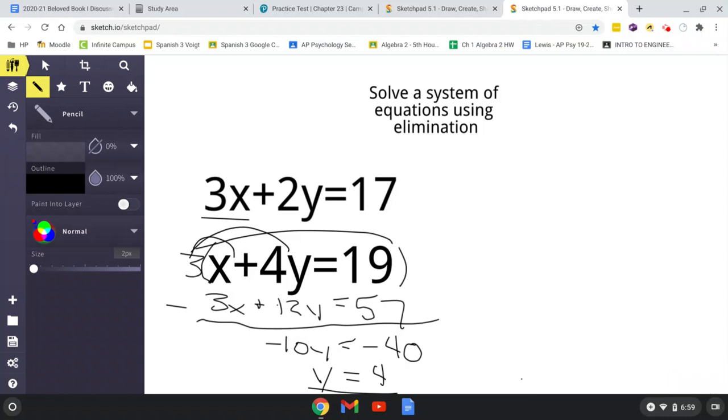And now that we have y solved, we can just use substitution and substitute 4 in for y into either of the expressions. So let's just substitute it into this expression here. So 3x plus 2 times 4,